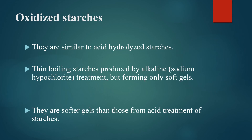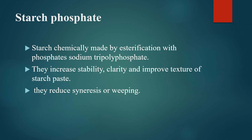Oxidized starches are similar to acid hydrolysis starches — they are also thin boiling starches — but they are produced by alkaline treatment. The key difference is that they form softer gels than thin boiling starches. Starch phosphates are formed by the esterification of starch with sodium tri-polyphosphate. They increase stability, clarity, and improve the texture of starch paste. They also reduce syneresis or weeping.